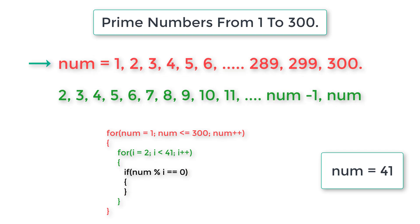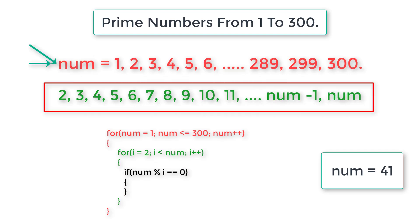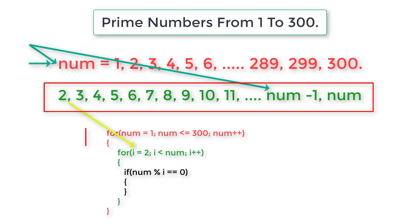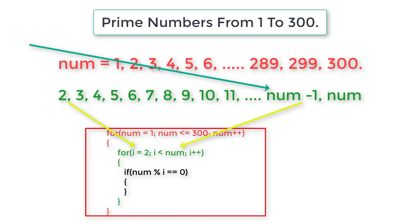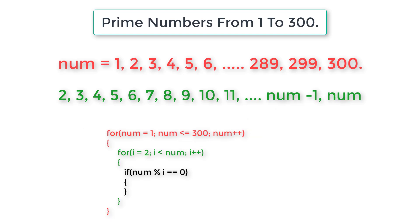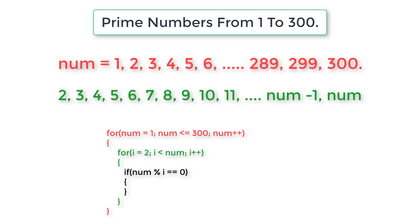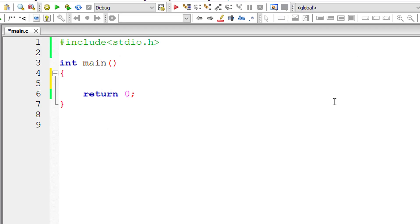Let me generalize this for loop. The selected number is present inside variable num, so we need to modulo divide from 2 to num minus 1 times. To reduce the number of iterations of this inner for loop, we can check i is less than or equal to num divided by 2, or else i is less than or equal to the square root of the selected number. Both give correct results. Let's get started with our C program.